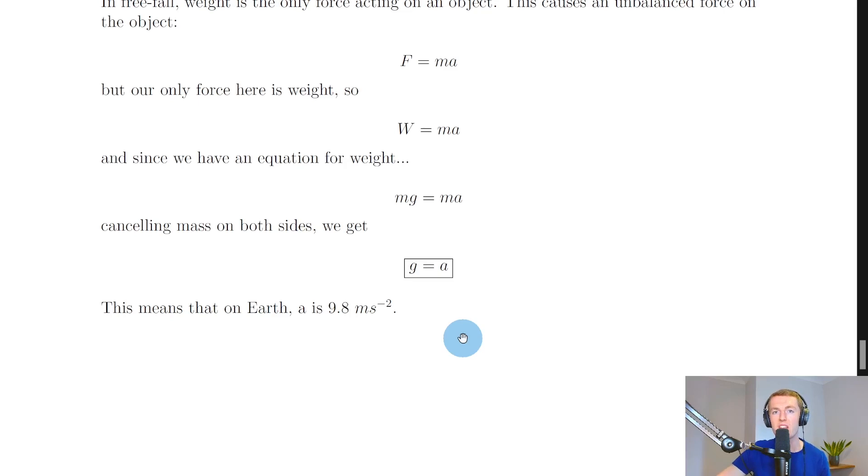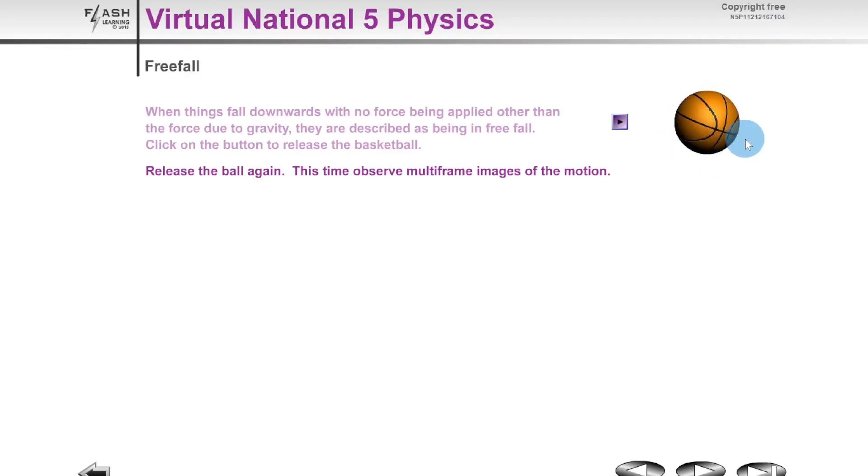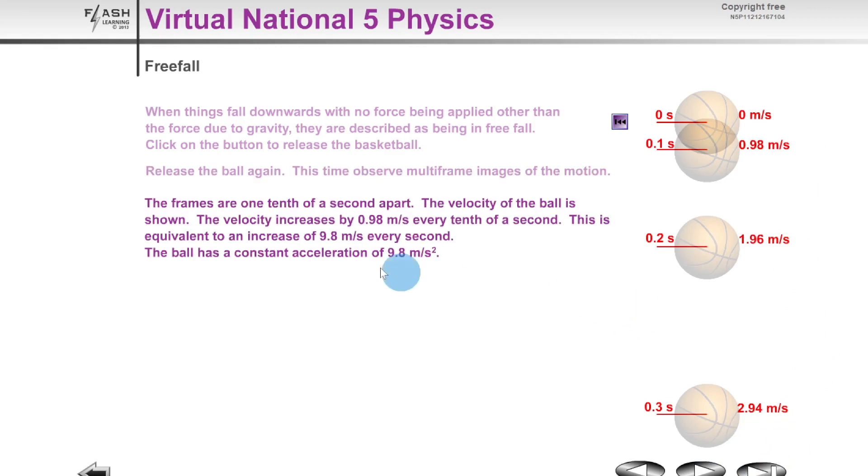Now let me show you a quick simulation to help you visualize this. Let's say we have a basketball and we're going to let it go from high up so that it moves in free fall. We're going to observe multi-frame images of the motion. If I click play here, you'll see we have the motion traced out every 0.1 seconds—speeds of 0 meters per second, 0.98 meters per second, 1.96 meters per second, and 2.94 meters per second.